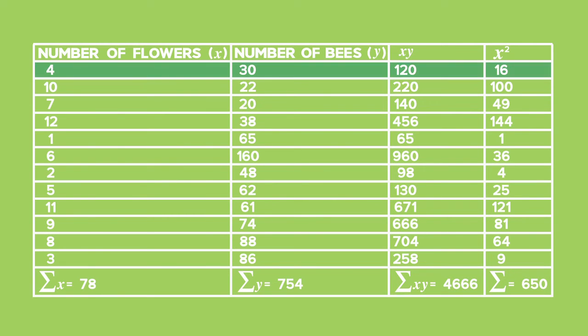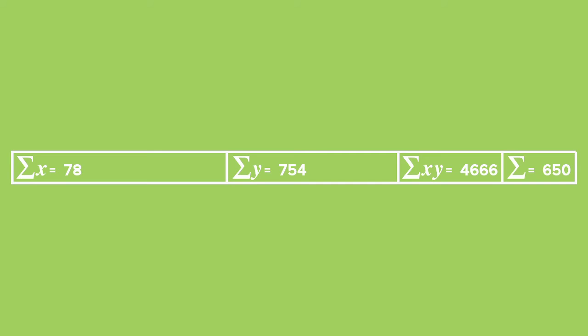Let's look at the second row a little closer. We see that four flowers were visited by 30 bees. The product of x and y is 120, and that goes under xy in column 3. x-squared, which is the number of flowers squared, is 16, and that value is shown in column 4. You complete the table row by row, as in row 1, for all 12 days. Once all the values have been entered into the columns, we find the sum of each column.